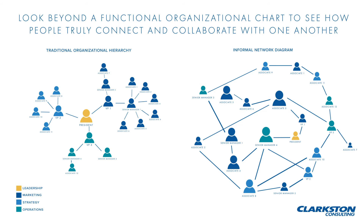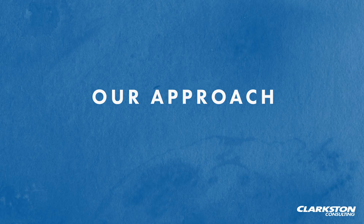Similarly, in the traditional organizational chart, you may assume that the way communication flows from top to bottom is equal among all individuals. However, we see in the informal collaboration network that some individuals, such as Associate 7, may be more isolated when they collaborate with others. Change plans should focus on integrating isolated people like Associate 7 to increase engagement.